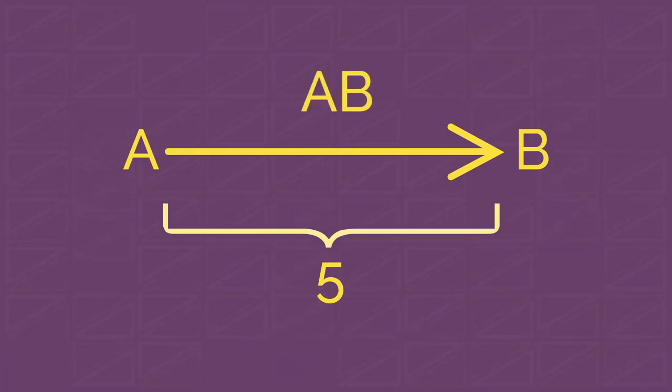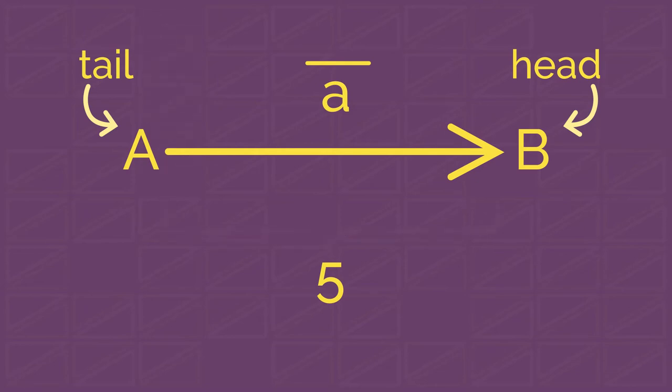We denote the vector from A to B as AB, or we can just name it with one of the lowercase letters, but also including an arrow or a line on the top. For example, A. We call B a head and A a tail. The length of that segment is our vector's magnitude.